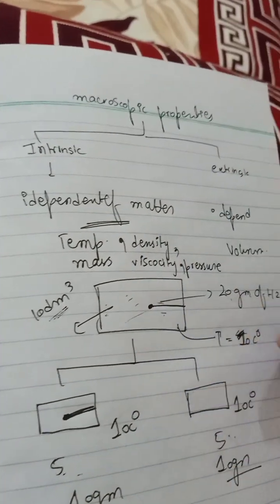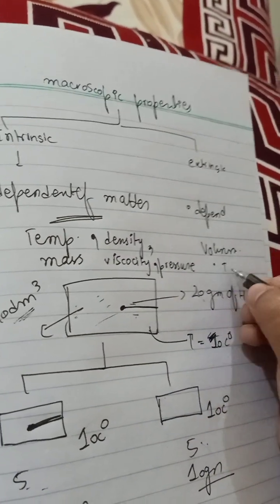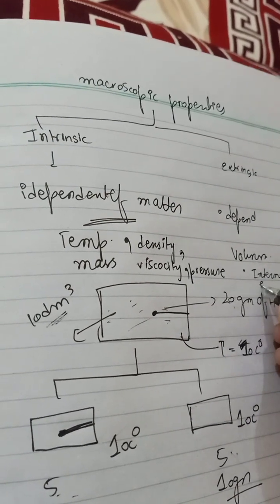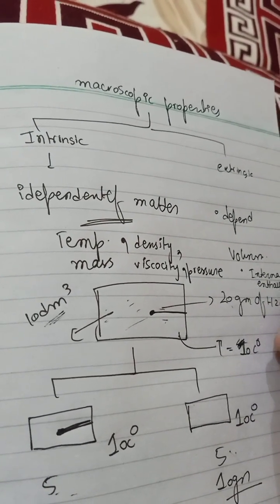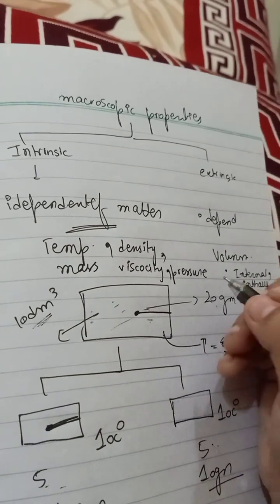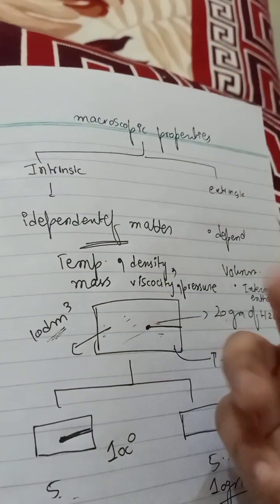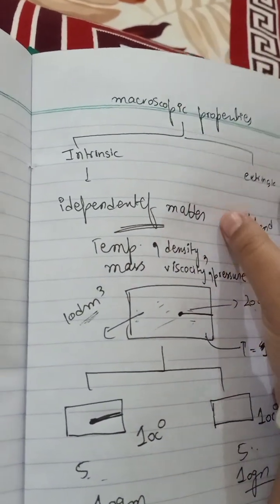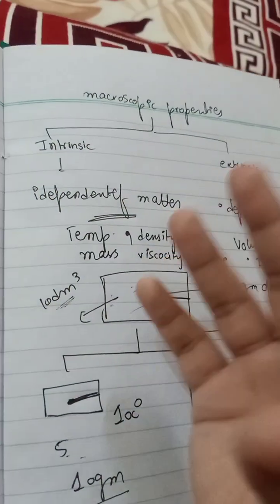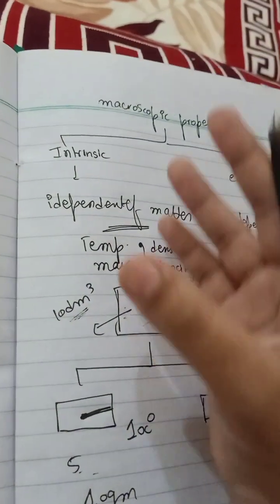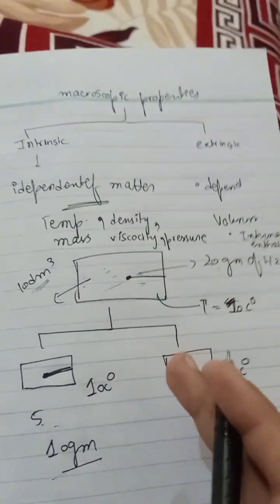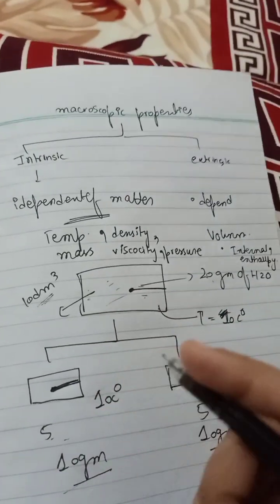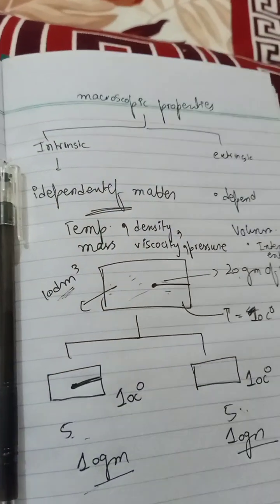You can take the example of surface tension — that will be the same. Internal energy can be changed, enthalpy can be changed, entropy can be changed — so these are extrinsic properties. A system in which the properties can get divided is extrinsic; a system in which the properties cannot be divided is intrinsic. I hope this video is clear to you. If there is any question, you can ask in the comment section.